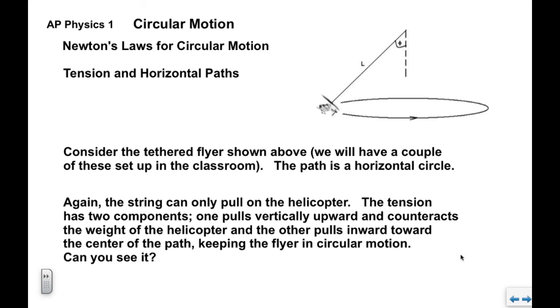What we see is that the string can only pull. So as far as the helicopter is concerned, that tension acts this way, up along the string. The tension has two components. One pulls up and it counteracts the weight of the helicopter or the FG of the helicopter. And the other pulls inward in the X direction towards the center of the circle. Anywhere in the path, that X component of the tension is always going to point towards the center of the circle.